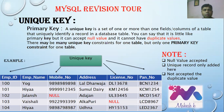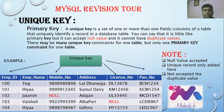Unique key is a set of one or more columns in a table that uniquely identify a record in a database table. It is similar to a primary key, but it can accept null values — whereas primary key cannot accept null values. It cannot have duplicate values. There may be many unique key constraints for one table — you can assign unique key to many columns, which is not the case with primary key.